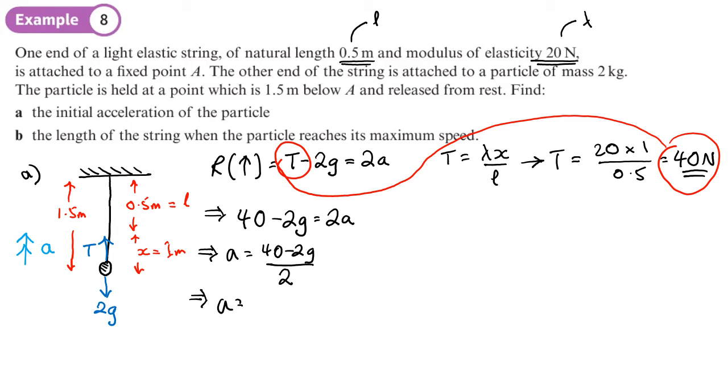So answer for part a, the acceleration, let's work that out. 40 minus 2g. It's a shame we don't have a g button on the calculator. So that's 51 over 5, which is 10.2. So 10.2 metres per second squared, so there's the initial acceleration.